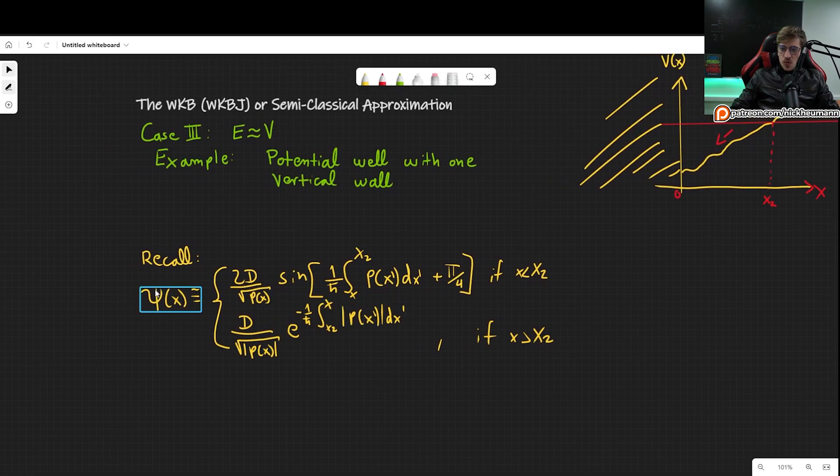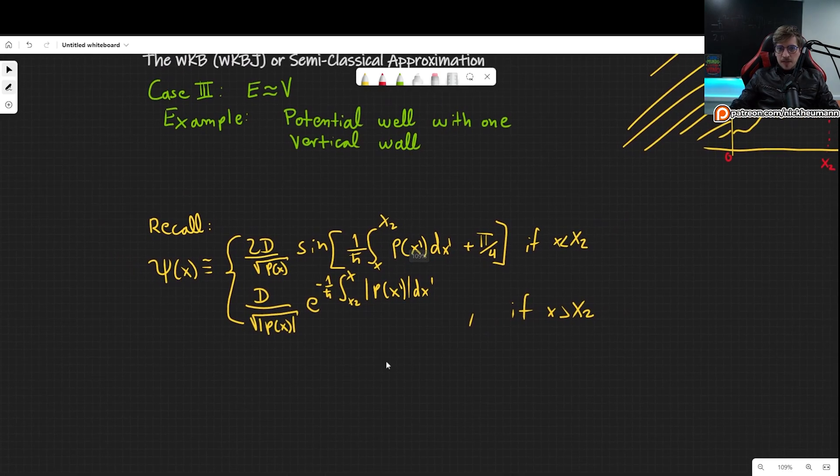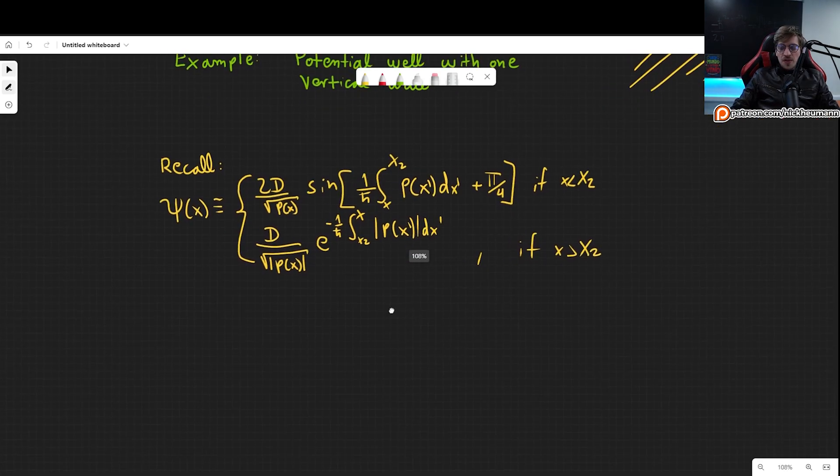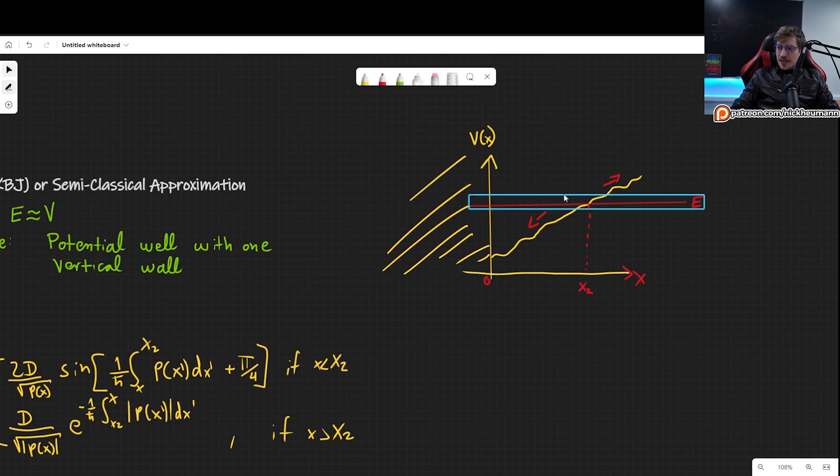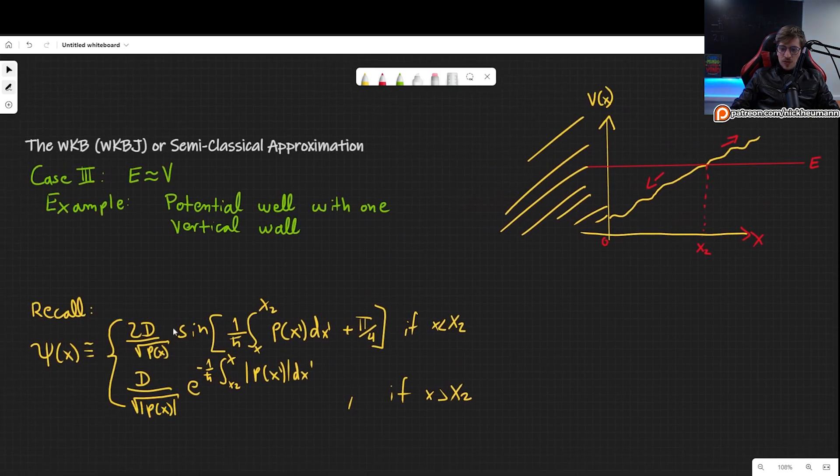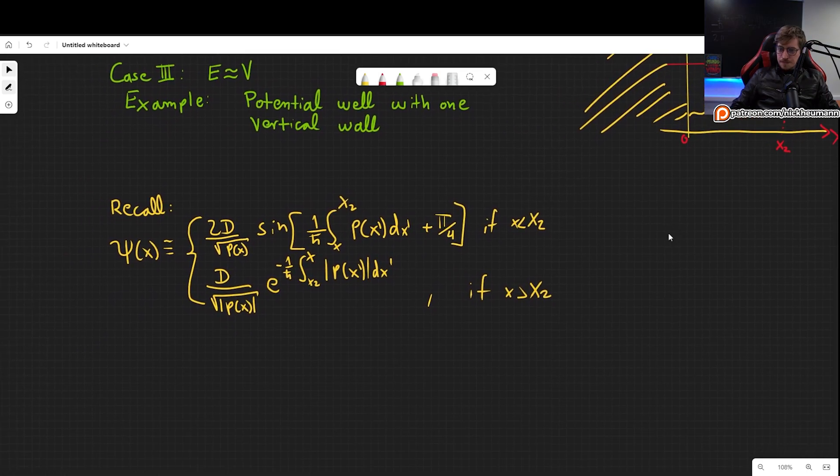So let's recall what our function was. We can actually find some pretty interesting results without even specifying a potential. So all that we know about this situation is that it is upslope, and that means that we can use this formula, and there is an infinite potential when x is smaller than 0. So that means that our wave function at 0 needs to be equal to 0. But what is our wave function there?